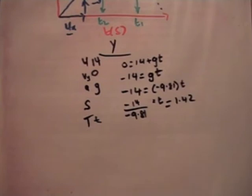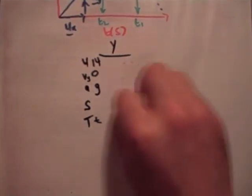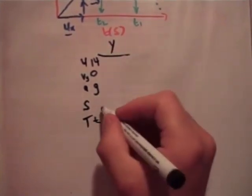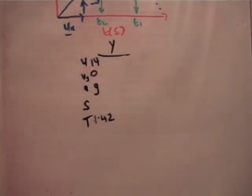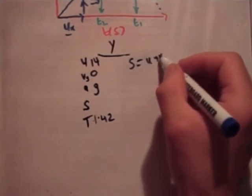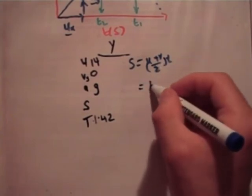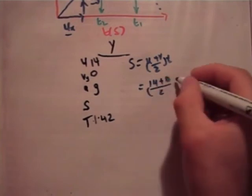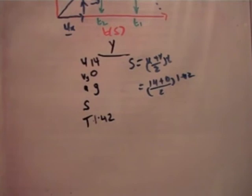So we've found the time at which the particle has come to rest, 1.42 seconds. What we need to do now is find the height that corresponds to 1.42 seconds. We can use any of the formulas we usually use. I'm going to use u plus v over 2 times t. So it's 7 multiplied by 1.42. That gives a distance of 9.98 meters, approximately 10 meters.